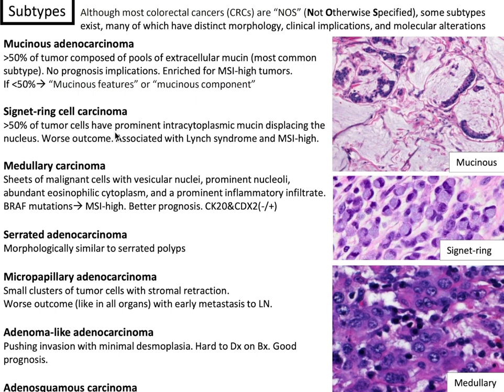There are a couple of subtypes of colorectal cancers. Although most colorectal cancers are NOS, some subtypes exist, many of which have distinct morphology, clinical implications, and molecular alterations. Mucinous adenocarcinoma is defined as greater than 50% of tumor composed of pools of extracellular mucin. This is the most common subtype, with no prognostic implications, and it is enriched for microsatellite instability or MSI-high tumors. If less than 50%, you can note mucinous features, but cannot call it mucinous adenocarcinoma.